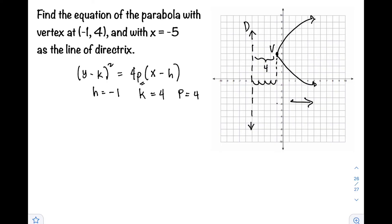Now we can substitute h, k, and p into our formula: (y - k)² = 4p(x - h), which gives us (y - 4)² = 4(4)(x - (-1)).